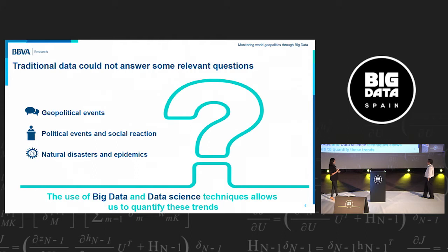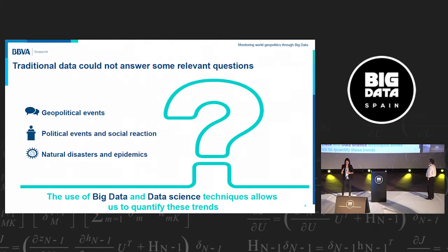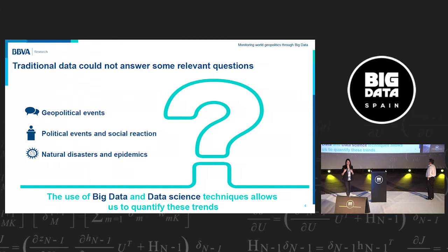Why is big data important for us? We live in a world that is continuously changing with a lot of events happening in real time. Using traditional data, we don't have the way, in most cases, to measure these events or to quantify their impact in order to know how important they are. To solve this, we use big data and information from the media to quantify all these events.